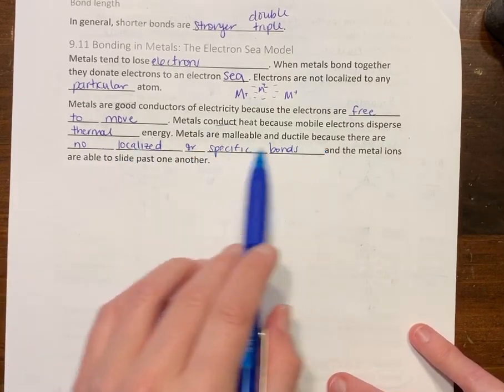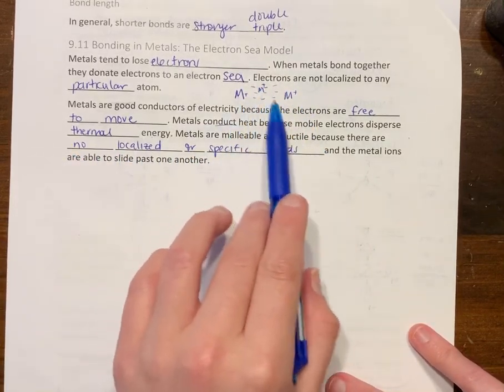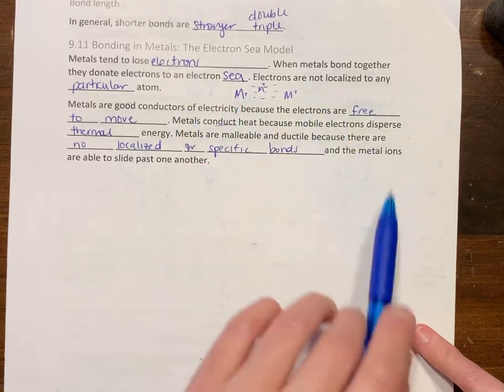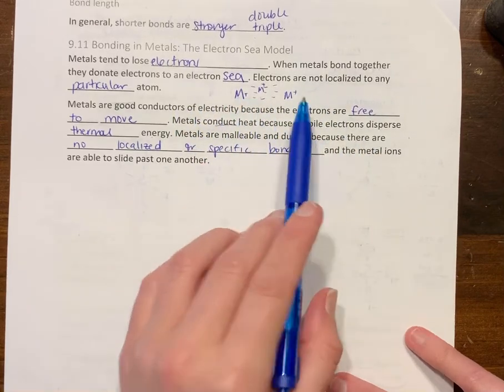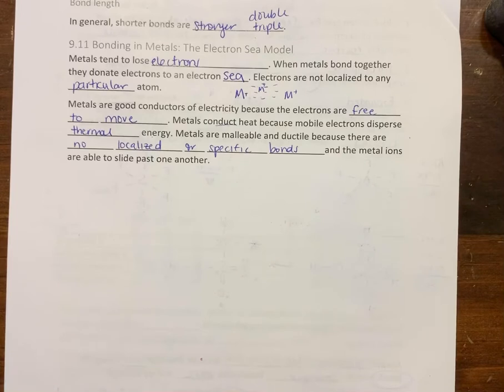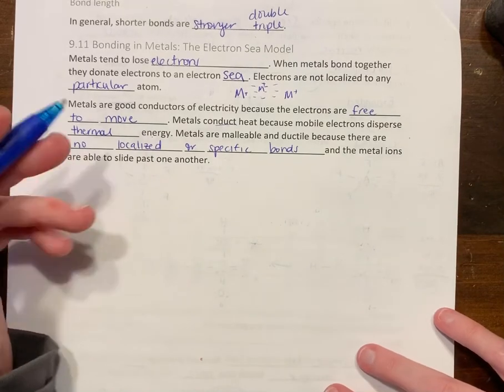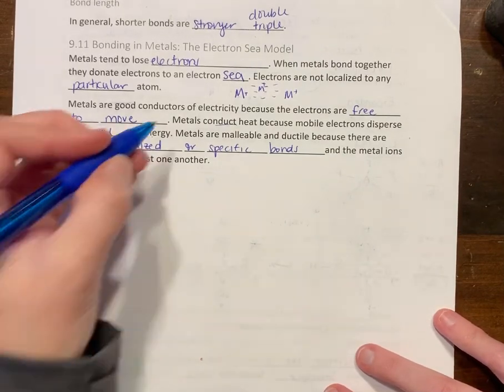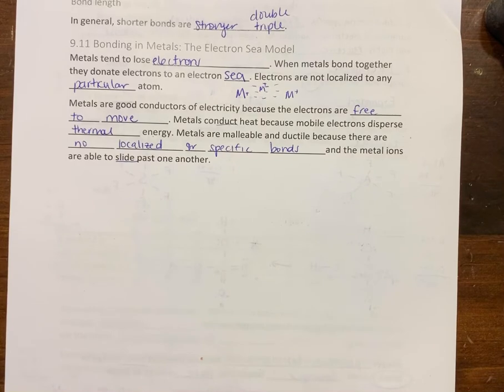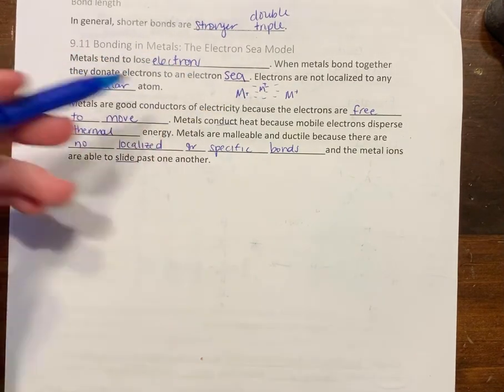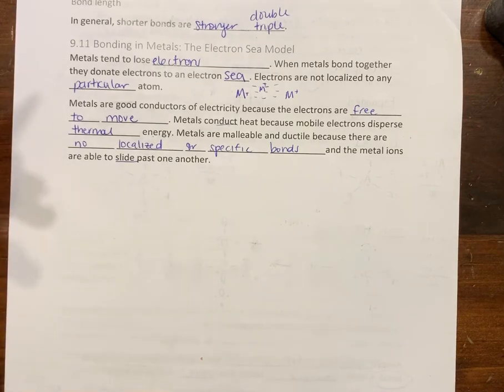Because they're all floating within this electron sea, these metal ion things just slide past one another. You can hammer them out to as thin of a sheet as you want. They just slide past each other.